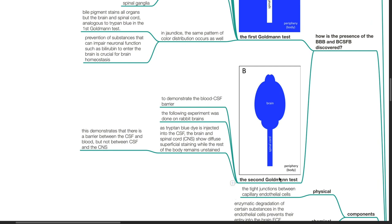In the second Goldmann test, trypan blue dye is injected into the CSF. The brain and spinal cord shows diffuse superficial staining while the rest of the body remains unstained. This demonstrates that there is a barrier between the CSF and the blood, but not between the CSF and the CNS.